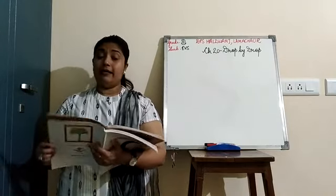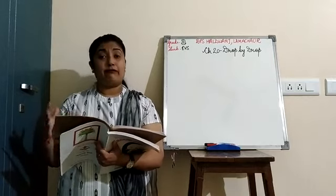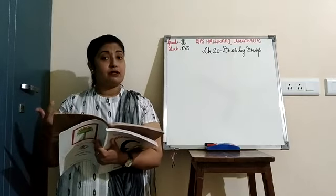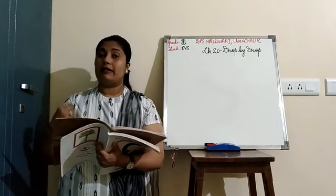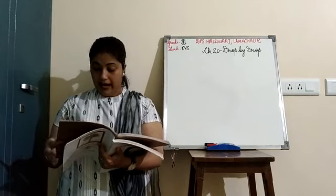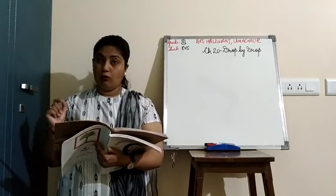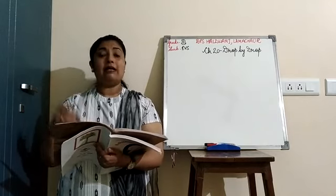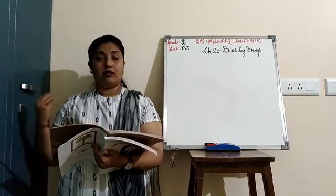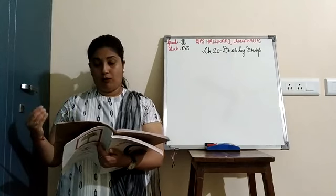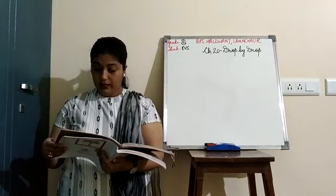Water is found in three different states: the first one is solid, the second one is liquid, and the third one is gas. Ice is the solid form of water, water is the liquid form, and water vapor is the gaseous form of water.